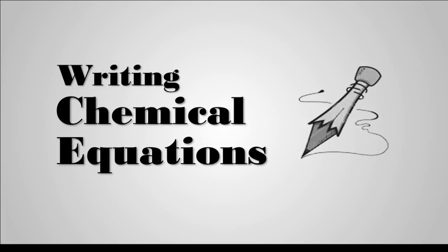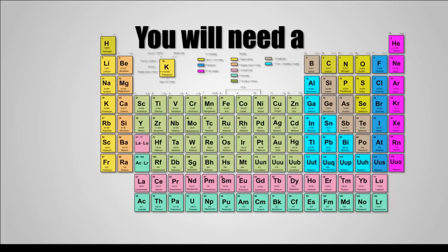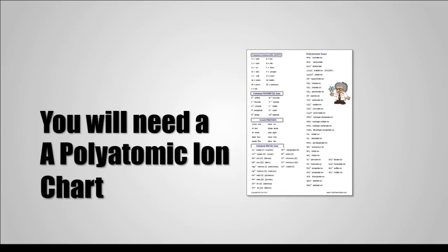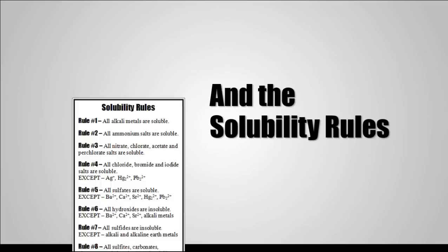I'm going to give you an example that goes along with one of our others. You're going to need a periodic table, you'll need a polyatomic ion chart, and you might even need your solubility rules. Let's take a look here.